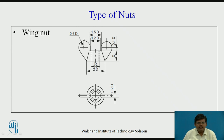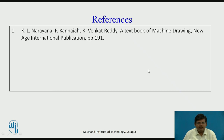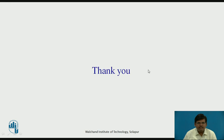Wing nut is used where frequent opening and closing of a particular component is done. These nuts can be operated with fingers or manually without any spanner — there is a wing-like structure with the help of which they can be rotated. These are the references. Thank you.